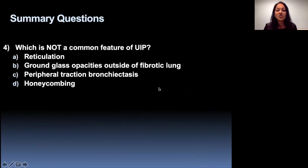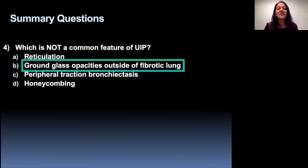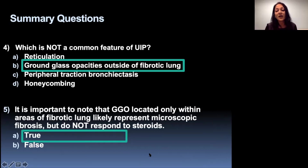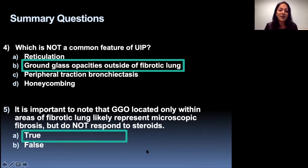Which is not a common feature of UIP — reticulation, ground glass opacities outside of fibrotic lung, peripheral traction bronchiectasis, or honeycombing? The answer is ground glass opacities outside of fibrotic lung. Finally, ground glass opacities located only within areas of fibrotic lung likely represent microscopic fibrosis but do not respond to steroids — true or false? This is true. It's important not to over-call the ground glass opacities, or at least to state that there's no ground glass outside of the areas of fibrosis.